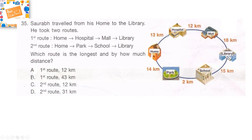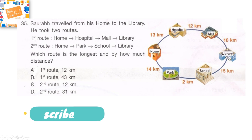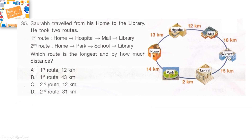Next question: a route is given. The first route is home → hospital → mall → library. The second route is home → park → school → library. Which route is the longest distance and by how much? Is it option A first route by 12 km, option B first route by 43 km, option C second route by 12 km, or option D second route by 31 km?